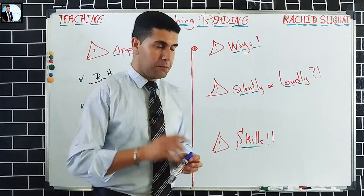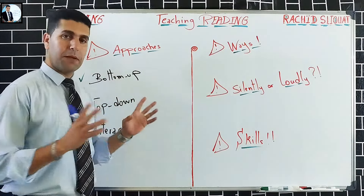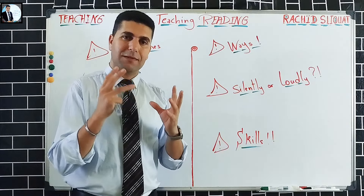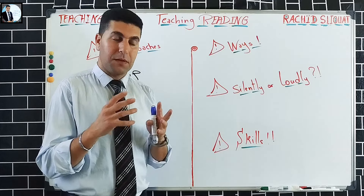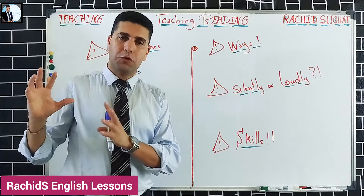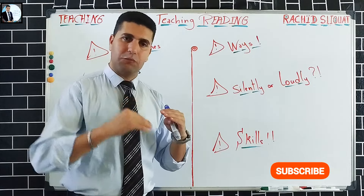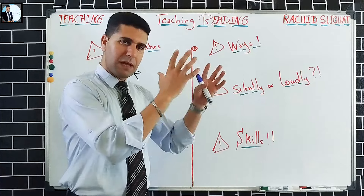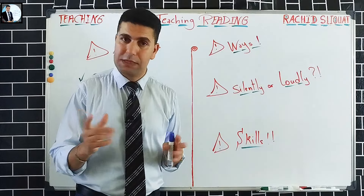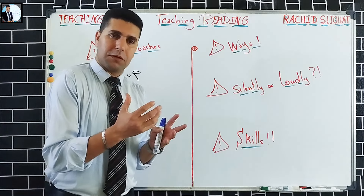When we talk about the approaches of teaching reading, we have three general approaches: the bottom-up, the top-down, and the interactive approach. When we talk about reading, there is a text, and a text consists of paragraphs, sentences, words, etc. It is also related to a certain topic, so every text revolves around a certain topic. We have language, words, sentences, and a topic that the text revolves around.